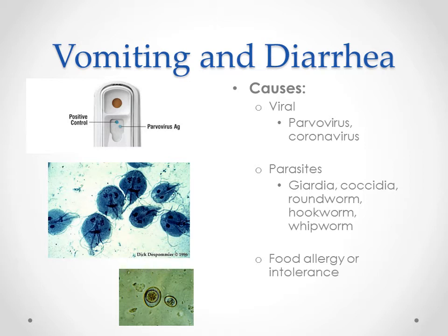For those of you in parasitology — parasites. We can see all sorts of things causing various degrees of vomiting and diarrhea. Giardia is really common and causes diarrhea in our patients. Coccidia is another common cause of diarrhea, usually not vomiting. And then roundworm, hookworm, and whipworm — all of our intestinal parasites — have the potential to cause vomiting and/or diarrhea in our patients.